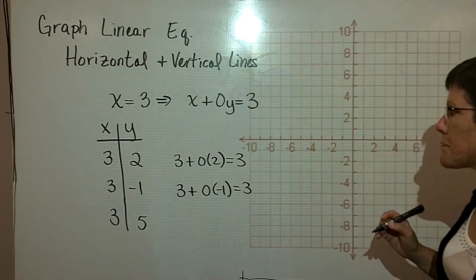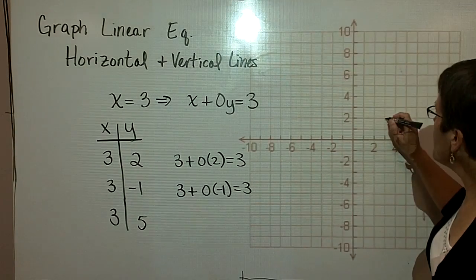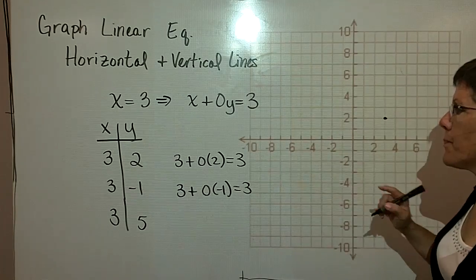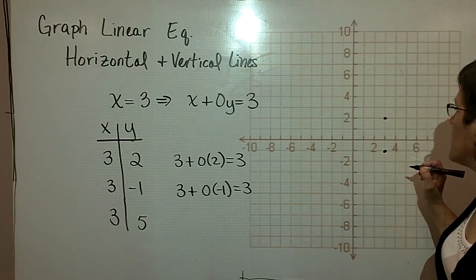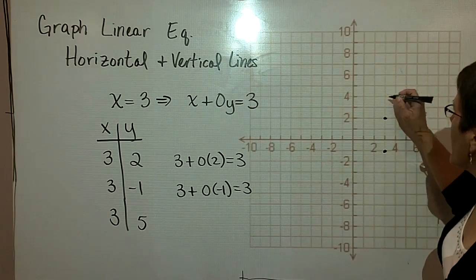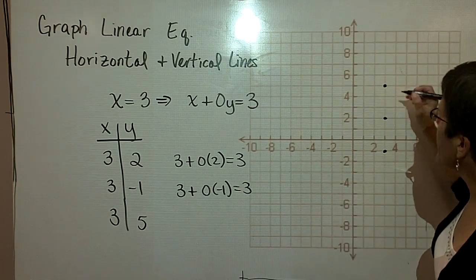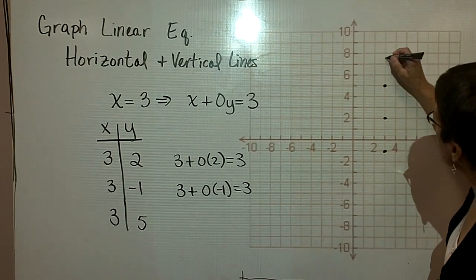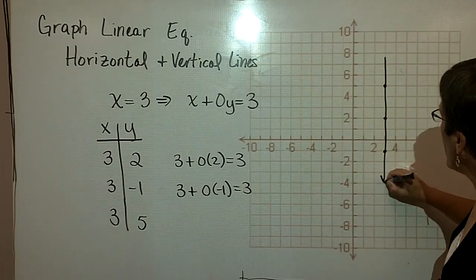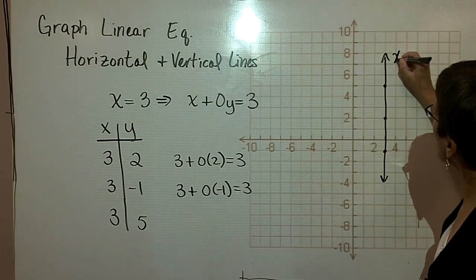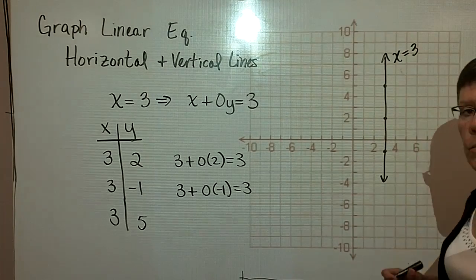So let's plot those ordered pairs. When x is 3, y is 2. Over here, when x is 3, y is negative 1. And finally, when x is 3, y is 5. And here's the graph of a vertical line where x is always equal to 3.